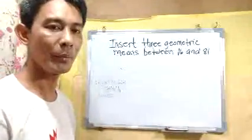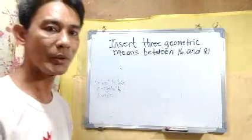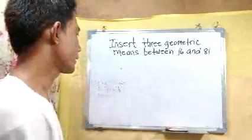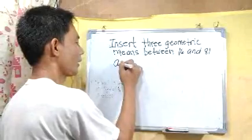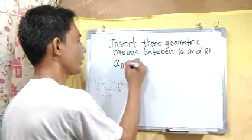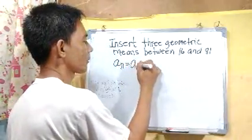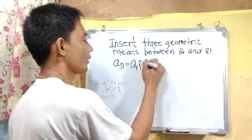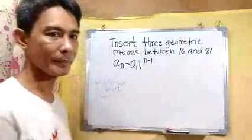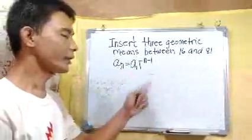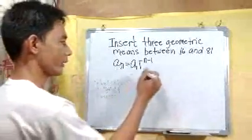To solve this problem, we are going to use the formula of geometric sequence, which is a sub n equals a sub 1 times r to the power of n minus 1. This is our formula for the geometric sequence.